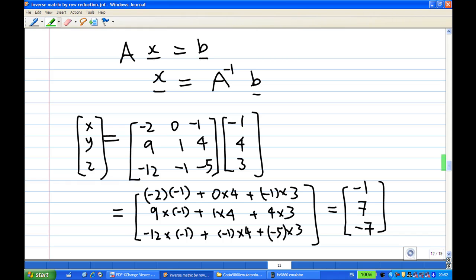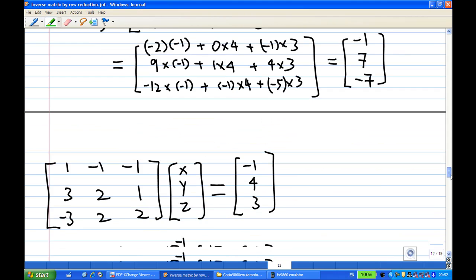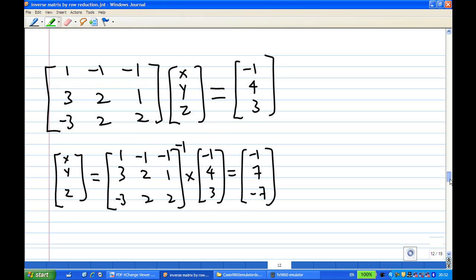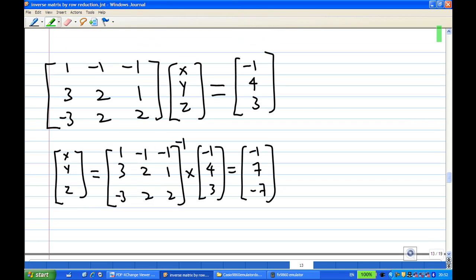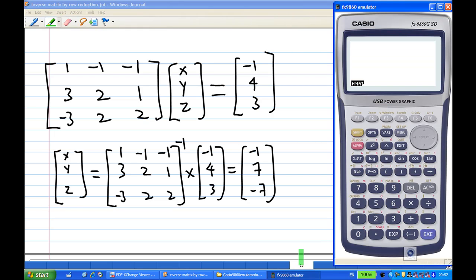I want to show you how to use Casio FX 9860 to find the vector x. So I'm going to look at this equation again. I want to solve the equation Ax equals B and x is equal to A inverse times B. So let me call out my Casio calculator. Now I'm in the run. Now I press F1 for matrix.